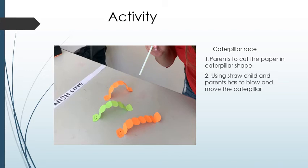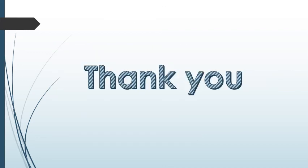During lockdown, it is very good to have some games with your children. Parents, you can cut a paper in a caterpillar shape and size, and using a straw, blow it. When it moves, you can explain to the child - if air is not there, how does the caterpillar move? By this simple activity you can teach the child and have fun also.